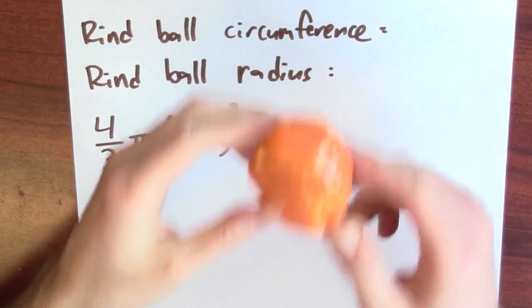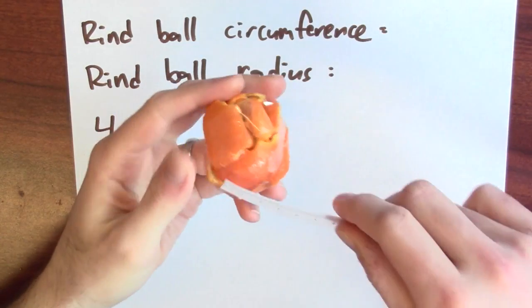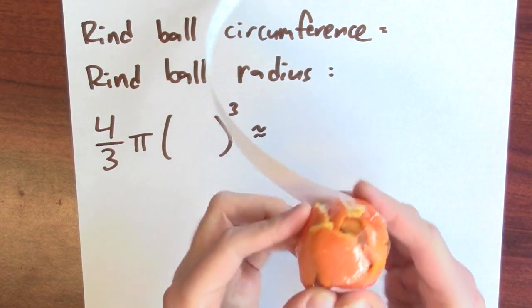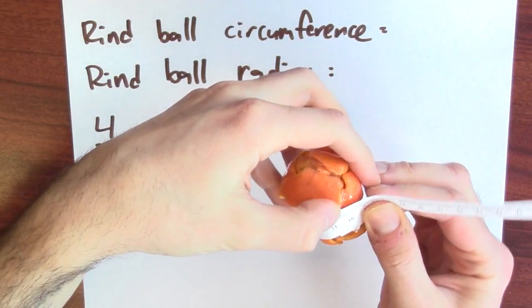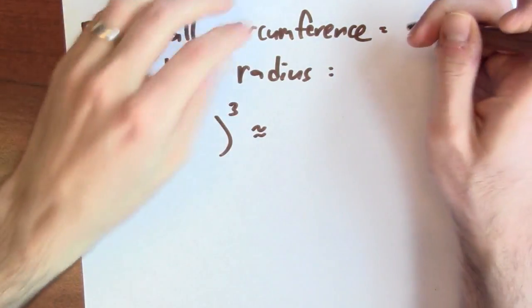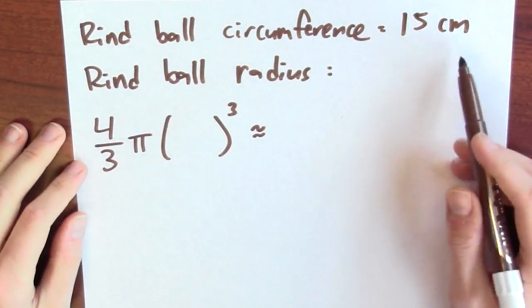I also want to see now how close the linear approximation was. So I've taken my orange and peeled off all the rind, and I've taken the rind and smooshed it down into this ball. I'll try to calculate the volume now of this rind ball. I want to compute the volume of rind. Let me compute the circumference of this rind ball. That's about 15 centimeters. So the circumference of my ball of rind is about 15 centimeters.